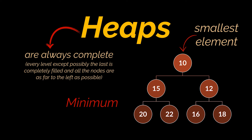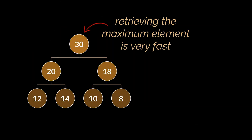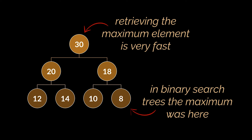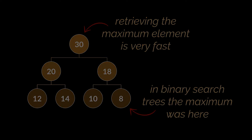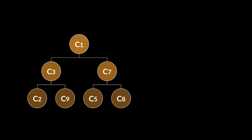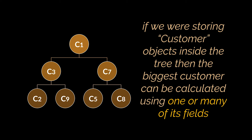Now the question you may be asking is: why do we need such a tree? Can't we do whatever we need to do using the binary search tree? Well, having the maximum or minimum element always located at the root makes its retrieval very fast, as the root node is the first element you have access to in a tree, contrary to binary search trees where we had to go to the far right or far left side of the tree to retrieve the maximum or minimum item respectively. Now take this maximum heap storing customer objects for example — the biggest customer can be calculated using one or many of its fields, meaning that a maximum or minimum can be obtained by means different than the mathematical or lexicographic maximum or minimum. Consequently, if you take this idea and implement it using heaps, you will obtain a very efficient and powerful implementation of the abstract data type we call priority queues.